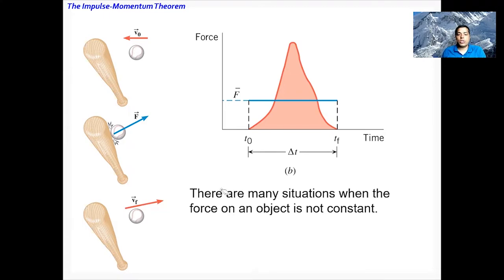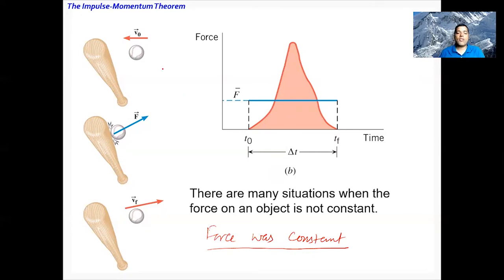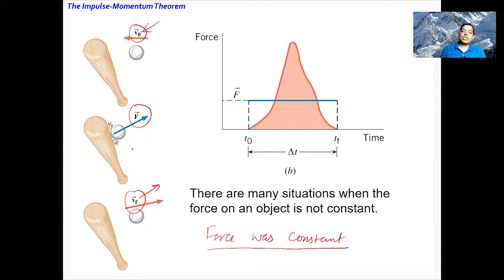In this slide I'm going to talk about a situation where the force on an object is not constant. So far we talked about situations where force was constant. Now consider a baseball coming towards the left with velocity v-zero, and the baseball is hit by a bat. The force exerted by the bat onto the baseball is F, and because of the force the baseball goes to the right with velocity vf.